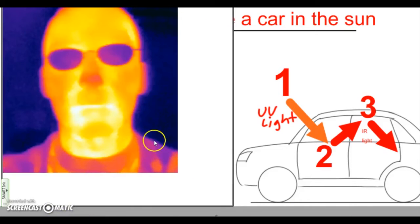Okay, so this is a picture of a person taken by an infrared camera. Now all warm things give off infrared light. We saw that before, but you can see his glasses are blocking that infrared light.